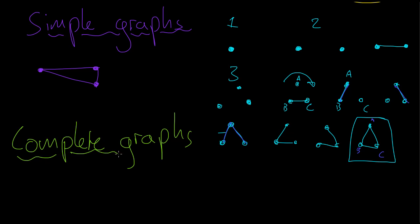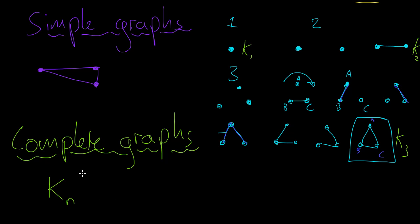Complete graphs can be written with a bit of notation. We use the letter K for complete — it doesn't really make much sense, but that's just the way we write it. That means a graph is complete, and we use a little n for the number of nodes. So for example, the three-node complete graph is K3, the two-node one is K2, and the one-node one is K1. Let's draw K4 — so K4 is going to have four nodes, and every single node is connected to every other node by precisely one arc.